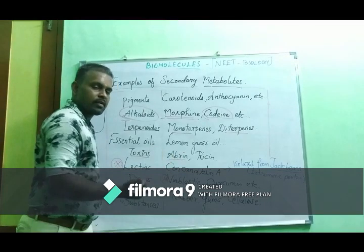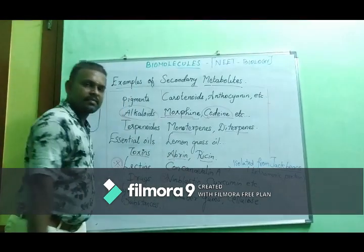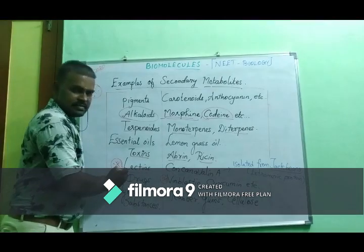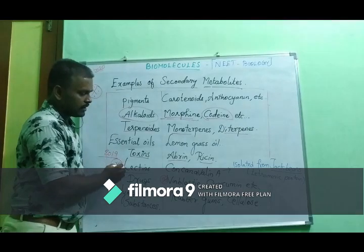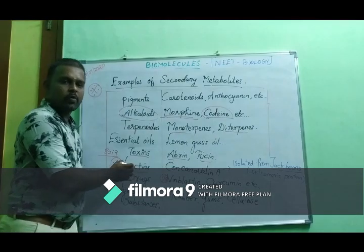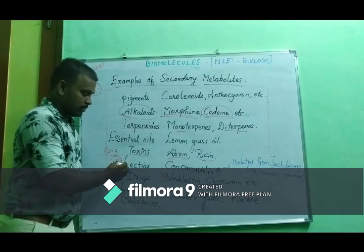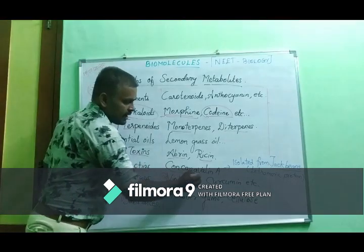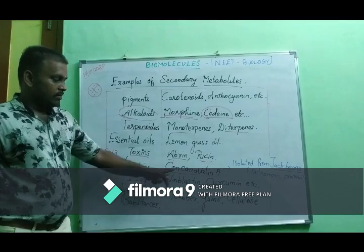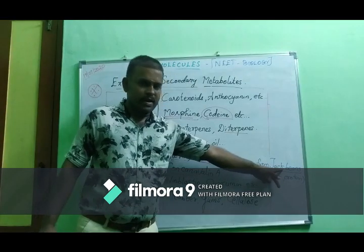Another class of secondary metabolites is toxins. Toxins can be isolated in trace amounts. For example, abrin and lectins are examples of toxins produced by plants. Lectins are carbohydrate-binding proteins, specifically binding to sugars. This was a question in the 2019 paper.